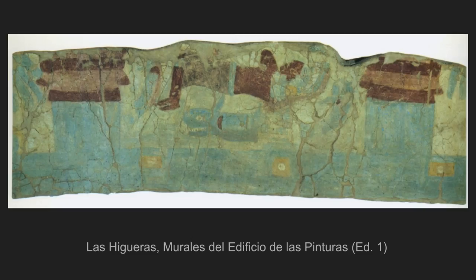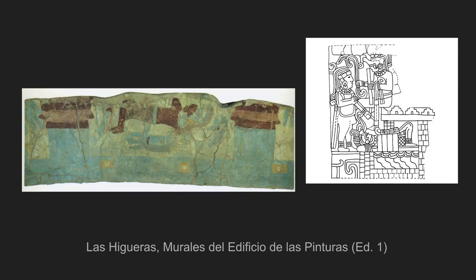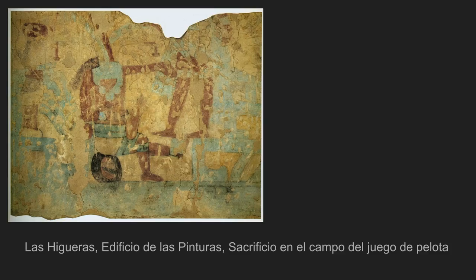I want to start by looking at a scene from Las Higueras, and I want to stress that this is a water scene. There are fish, there's a really interesting figure lying prone, there are two structures. We're going to see that that prone figure is actually not unlike a figure we're going to see in El Tajín lying in something of that same posture. And this figure is, in fact, going to be a sacrificial victim. I want to associate that sacrificial victim with water.